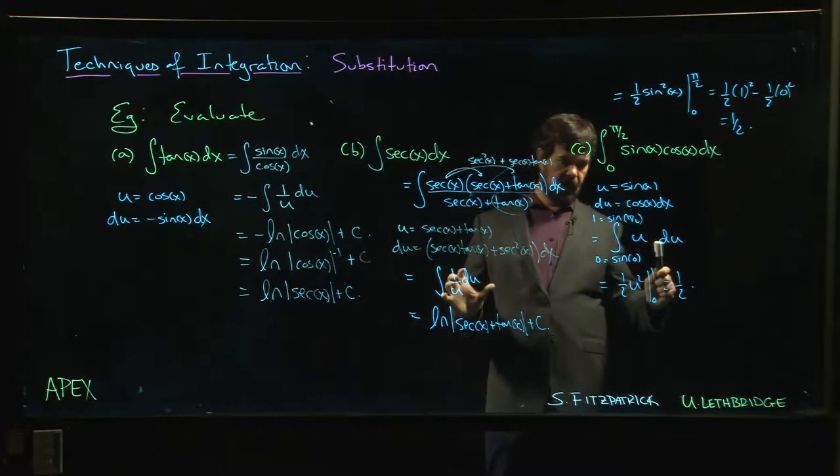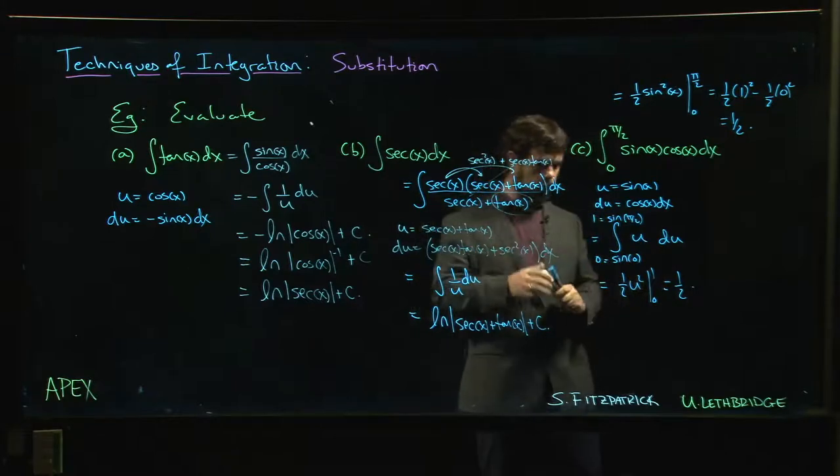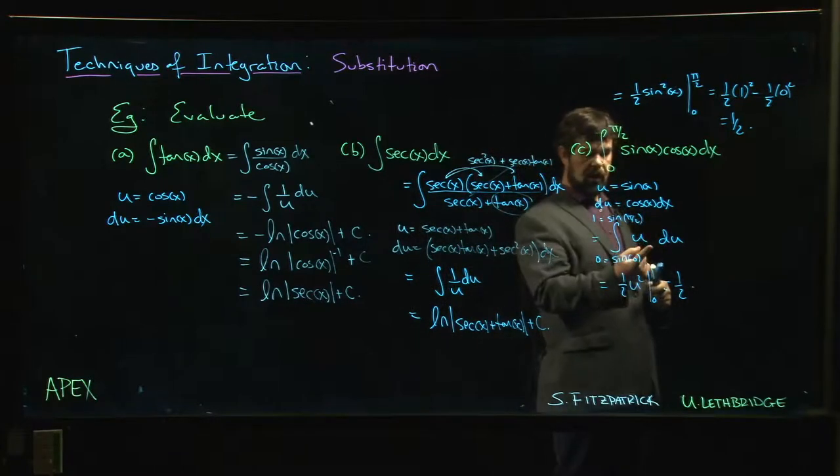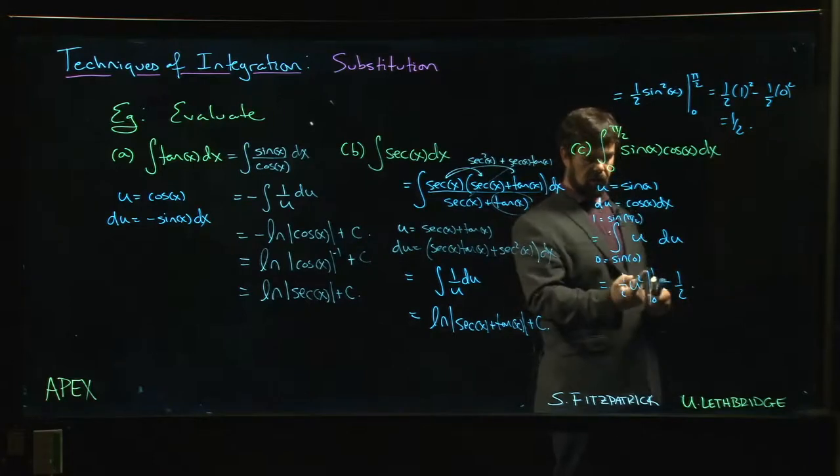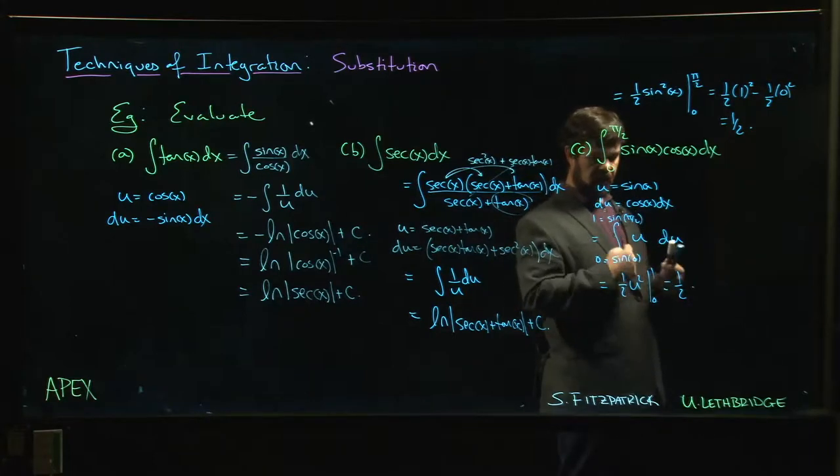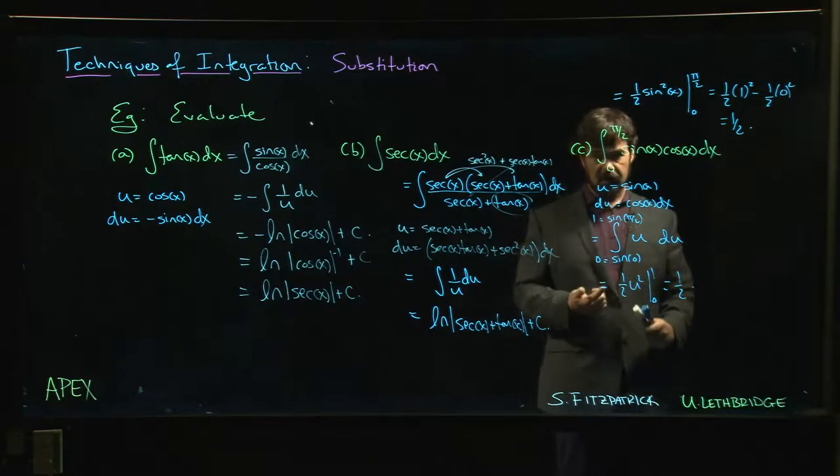Either way is fine. There's a sort of intermediate half measure that people kind of fall into where we do the u sub here, and we keep the limits, but we keep the original limits. That wouldn't be correct. It would not be correct to put pi over 2 here. The answer is not pi squared over 8. The answer is a half.